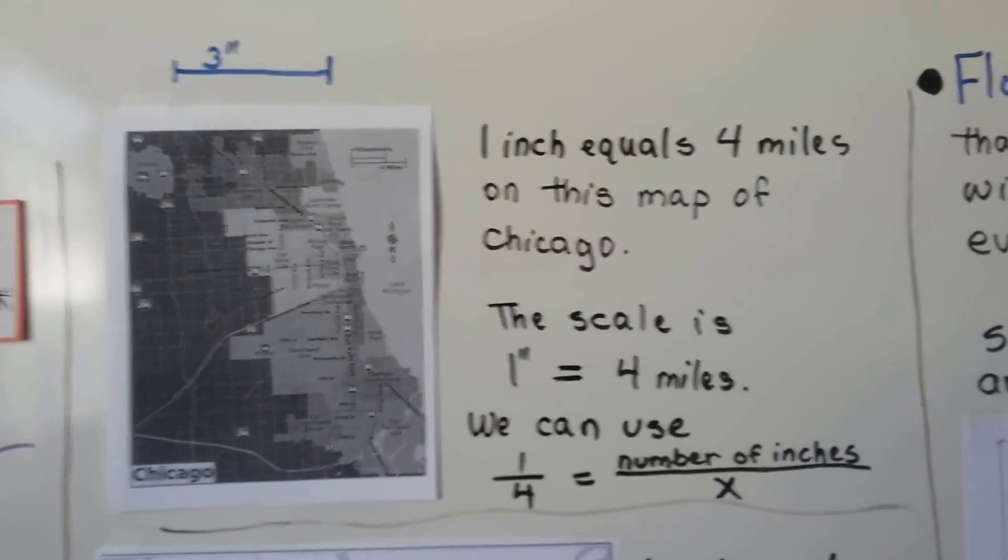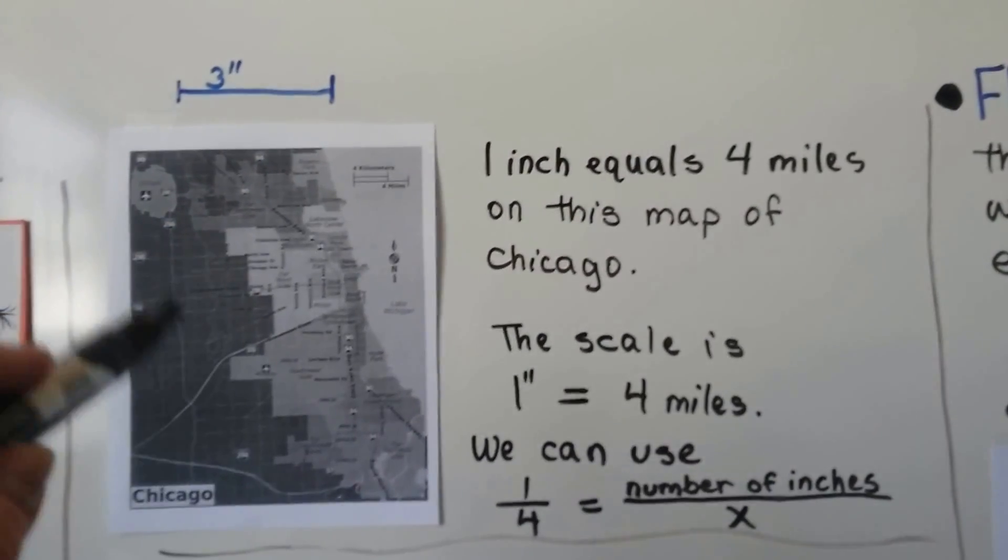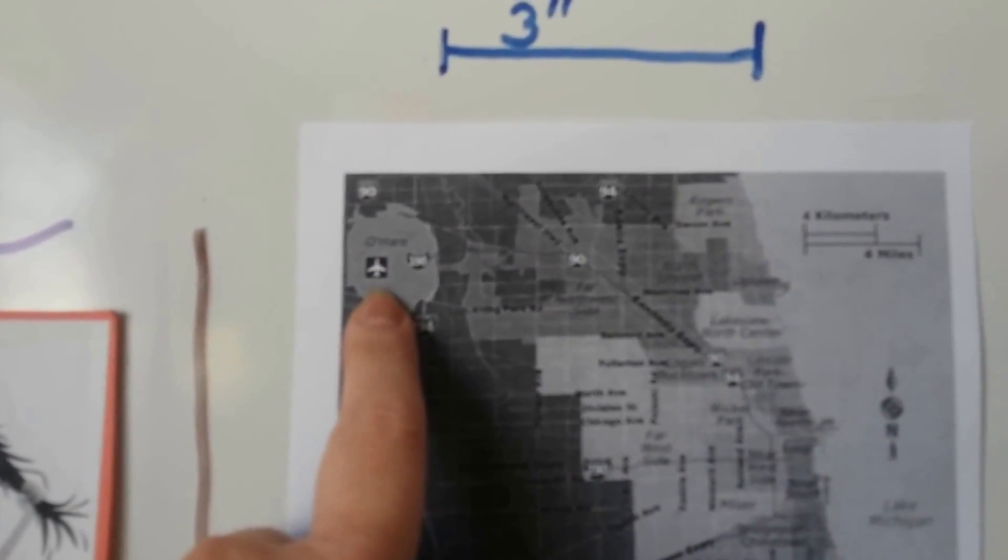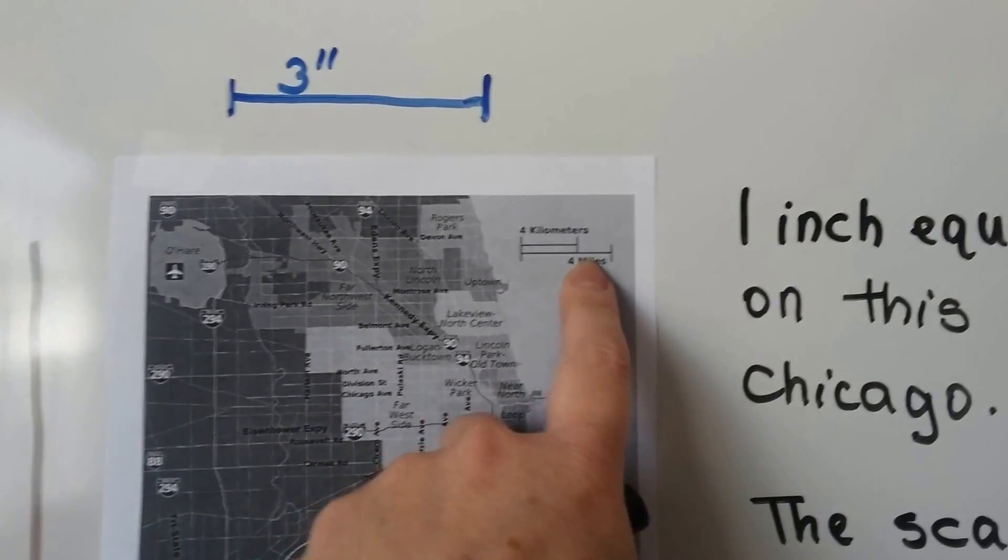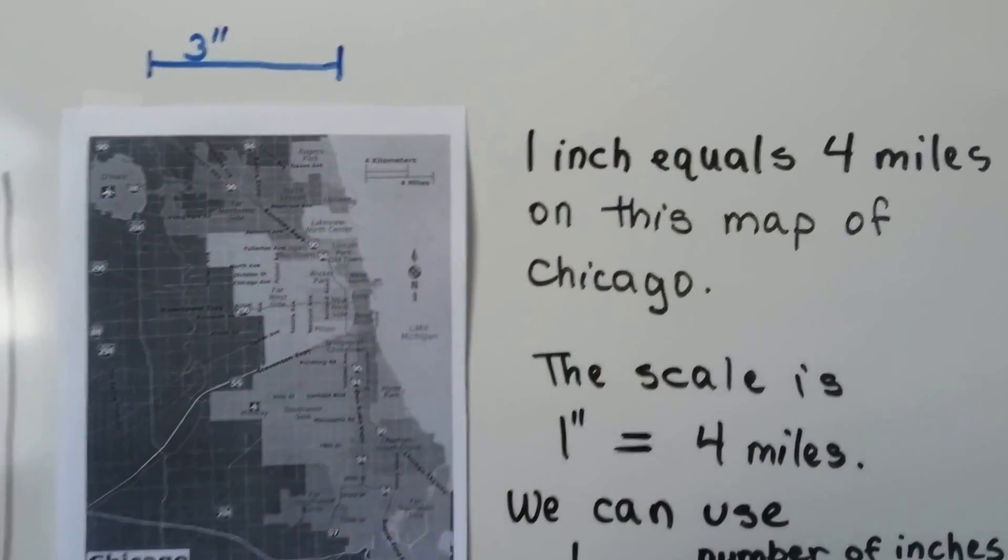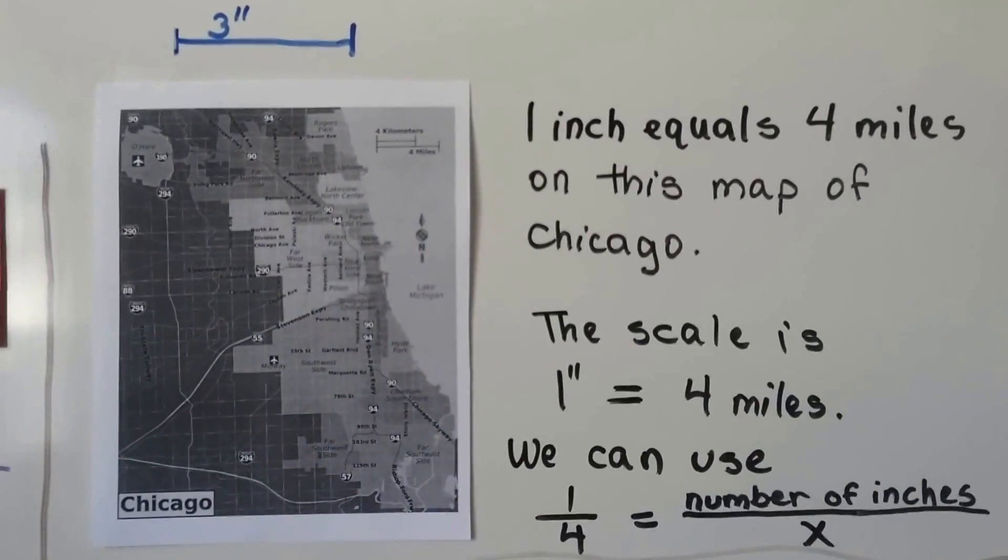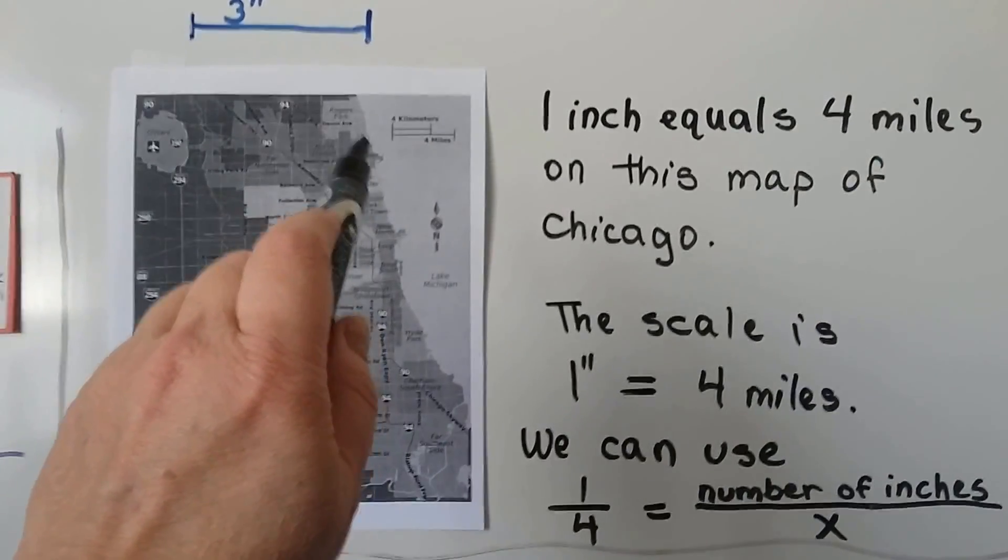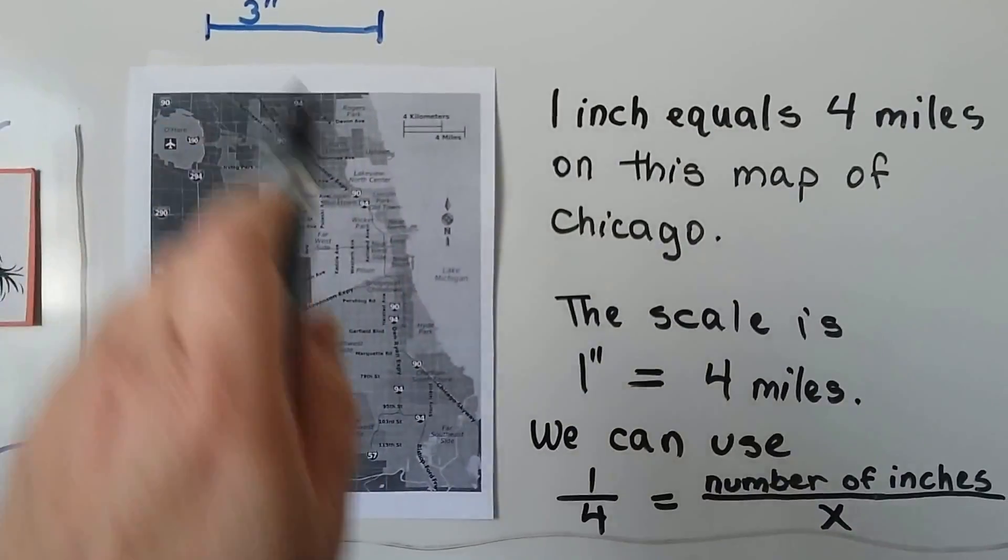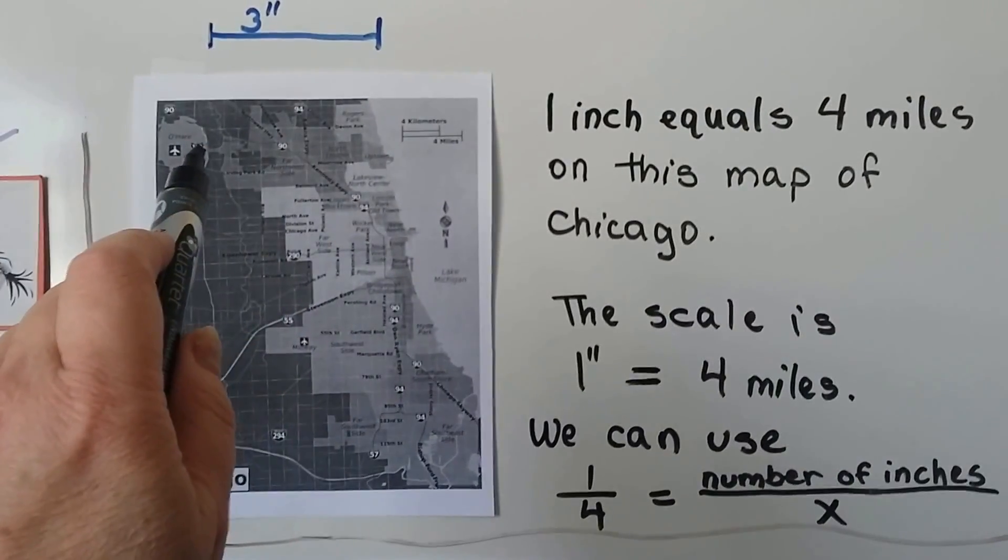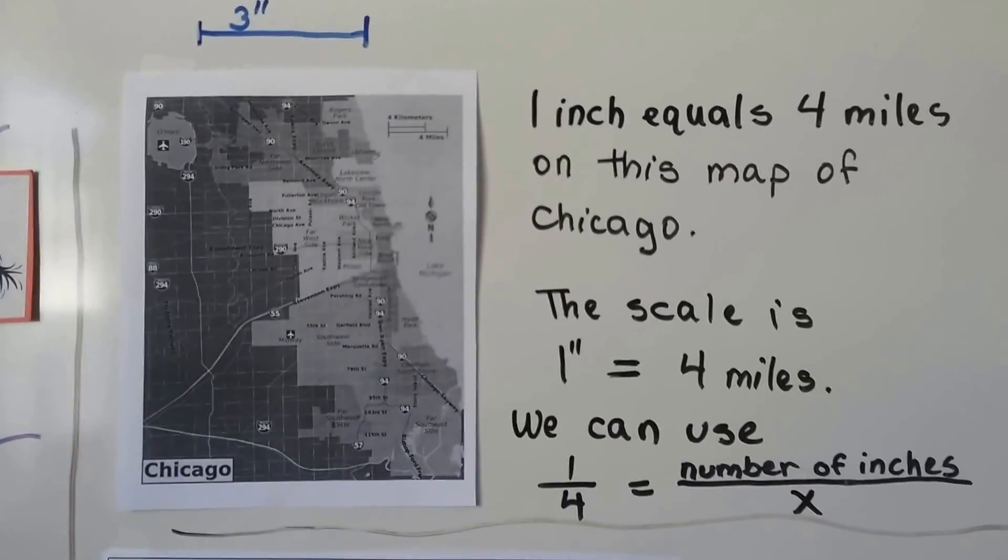So I have a map of Chicago here, and this is Chicago, and this is the suburbs. And if you look right here, that's O'Hare Airport. And it says on the map that one inch, I measured that that's one inch is four miles. So that's our scale. It's one inch equals four miles. And I measured with my ruler from the edge of O'Hare Airport to the edge of Lake Michigan, and it was about three inches. So if each inch is four miles, and that's three inches, we know it's about twelve miles from the edge of O'Hare to Lake Michigan, straight across.